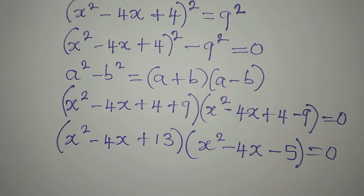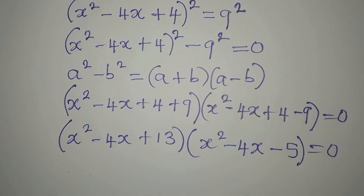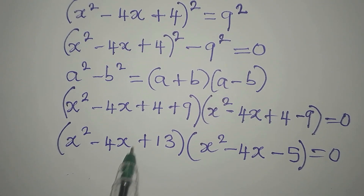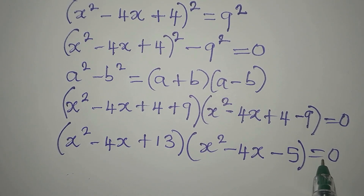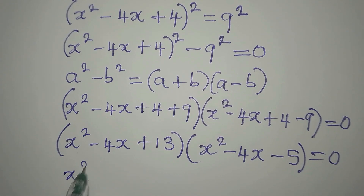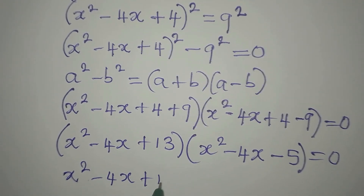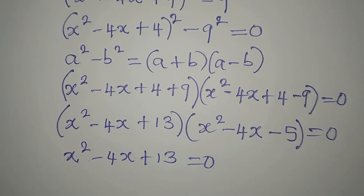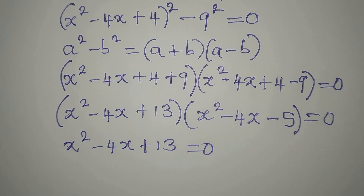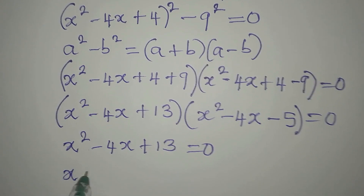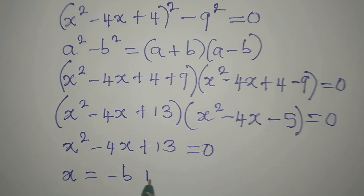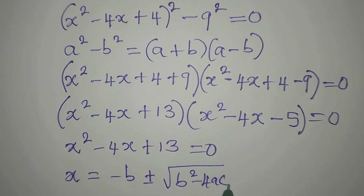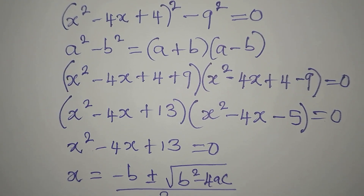We can now solve the two equations. We equate either factor to 0 since we are multiplying them to get 0. Starting with x squared minus 4x plus 13 equals 0. We solve using the quadratic formula: x equals minus b plus or minus square root of b squared minus 4ac, all over 2a.